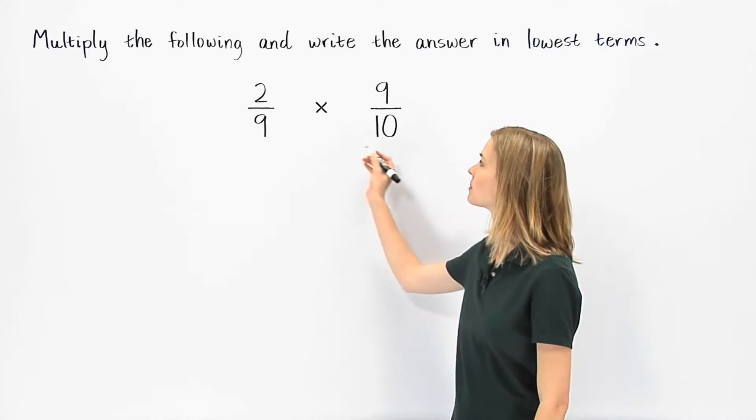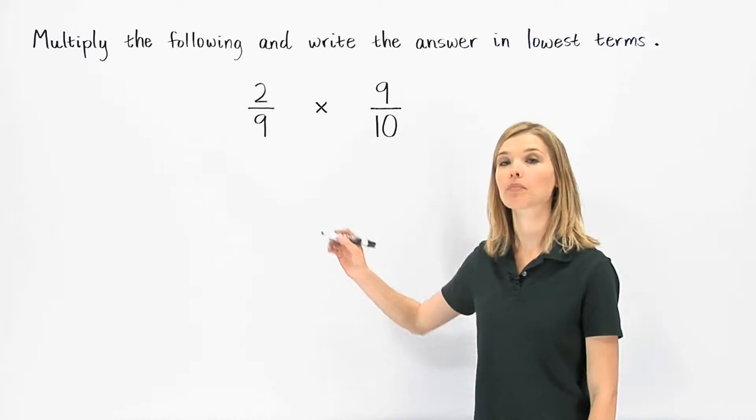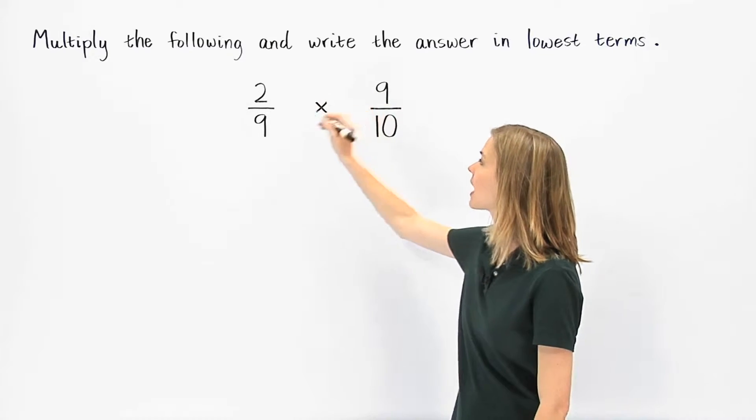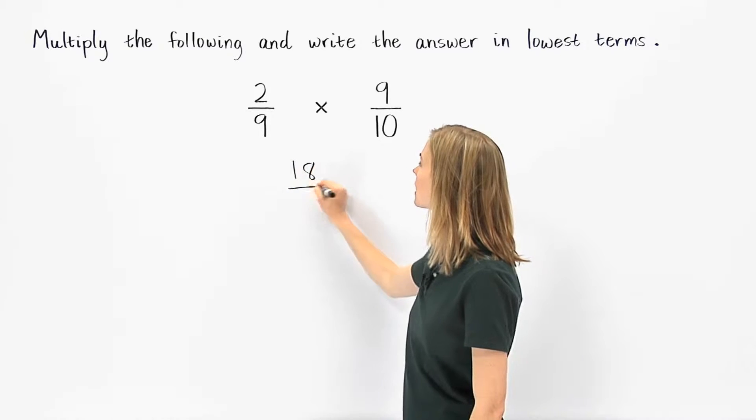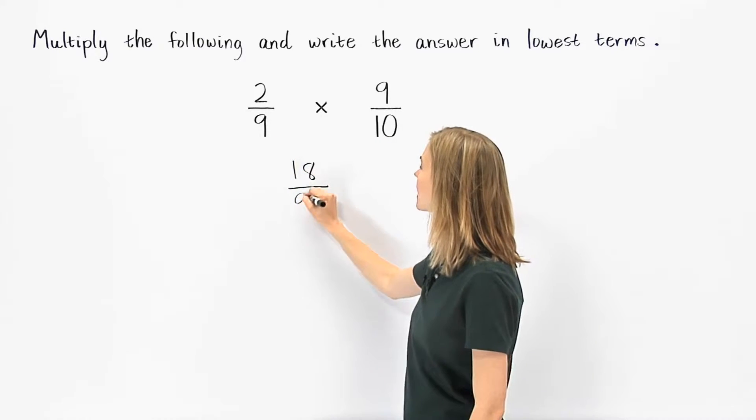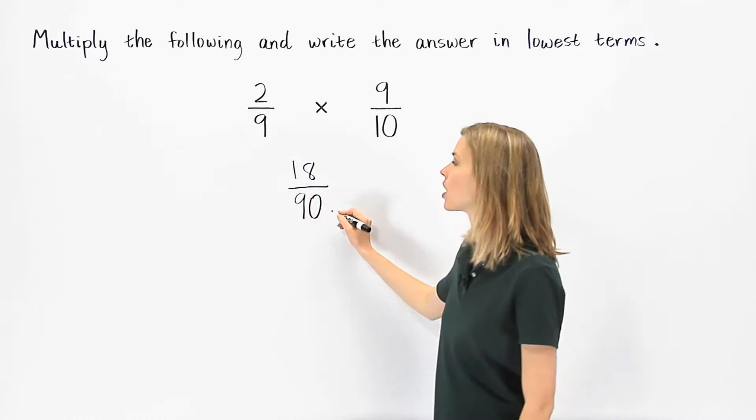To multiply 2 ninths times 9 tenths, we can simply multiply across the numerators and across the denominators. 2 times 9 is 18, and 9 times 10 is 90. So we have 18 over 90.